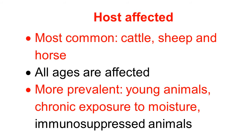The disease most commonly occurs in cattle, sheep and horses. All ages are affected, but the disease is more prevalent in young animals — those with chronic exposure to moisture, constant wetting of the skin, and heavy rainfall. It is also more common in immunosuppressed young animals, as reduced immunity allows the disease to occur.